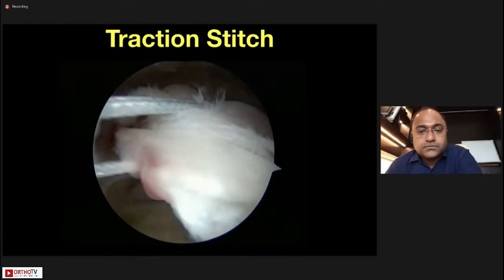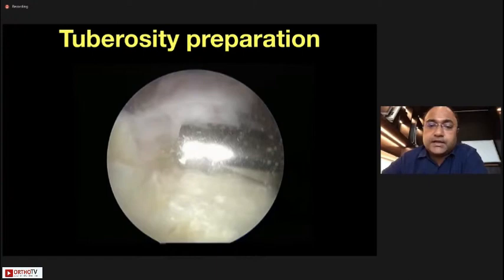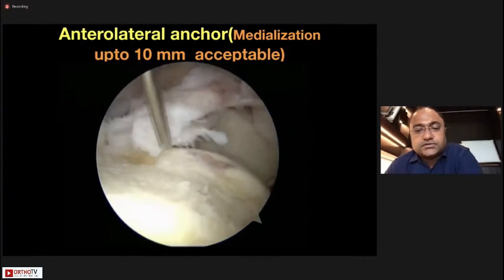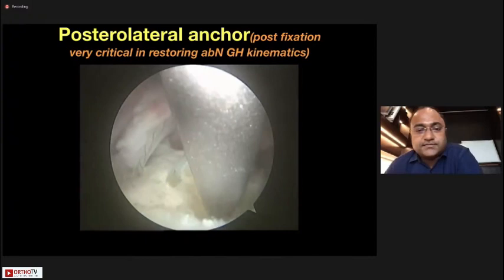Take traction stitches in different directions as needed, then prepare the tuberosity with very gentle decortication. Rotator cuff repair is like an unhappy marriage — poor-quality bone healing to poor-quality tissue. Get your spinal needle at a dead-man angle of near 90 degrees for perpendicular access to the subchondral bone right at the edge of the cartilage, then place your anchors. In this case I placed three triple-loaded anchors because of the massiveness of the tear.